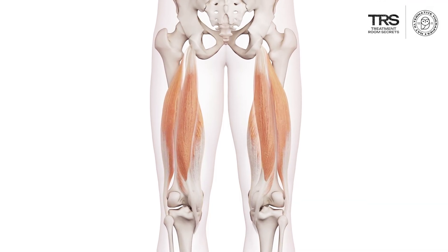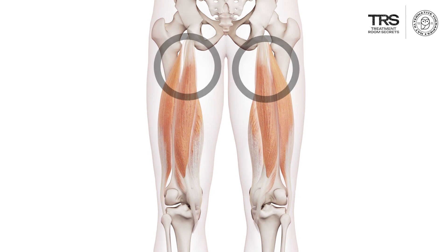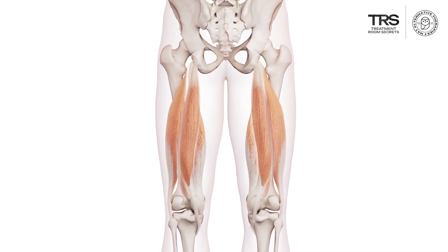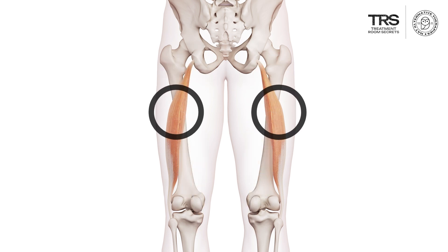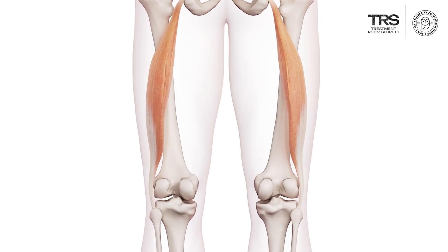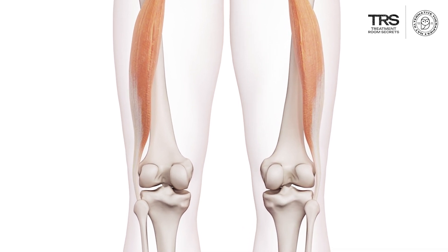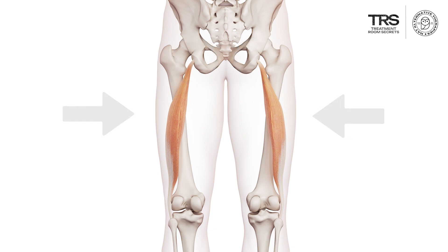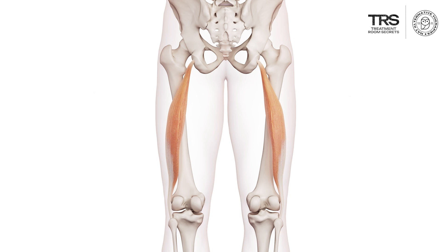We are now going to look at the hamstring muscles — a very common name that most people know. The hamstrings run down the back of the thigh. There are two sets of muscles that attach to the sitting bone. The first, running to the outside, is the lateral muscle called the biceps femoris. It arises from the sitting bone, runs down, and the tendon wraps around the back of the knee, attaching to the fibula on the outside of the lower leg. It's called 'biceps' because it has two heads; the second head attaches to the femur — hence 'biceps femoris.'